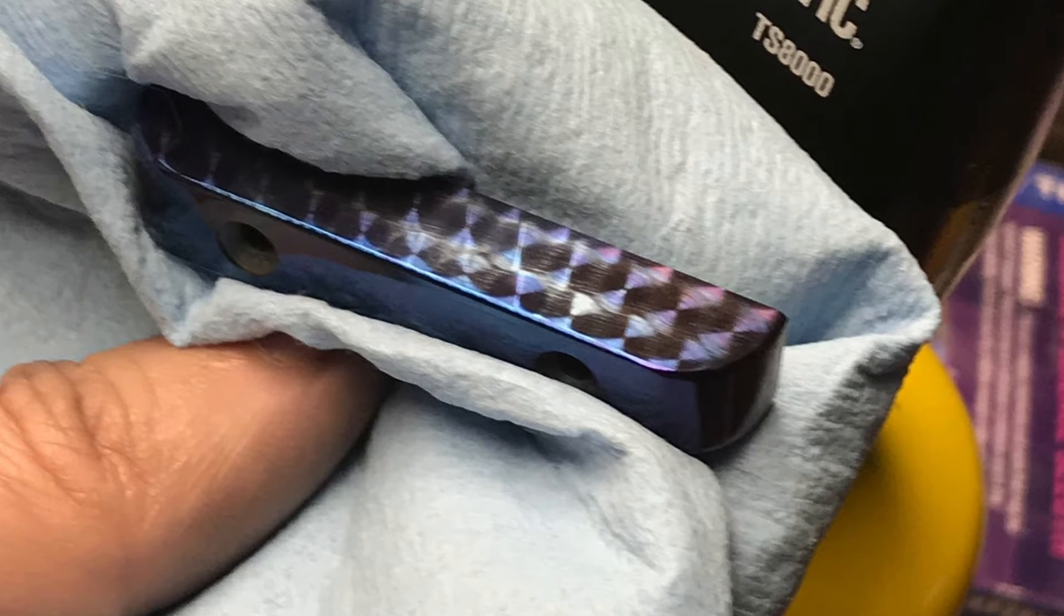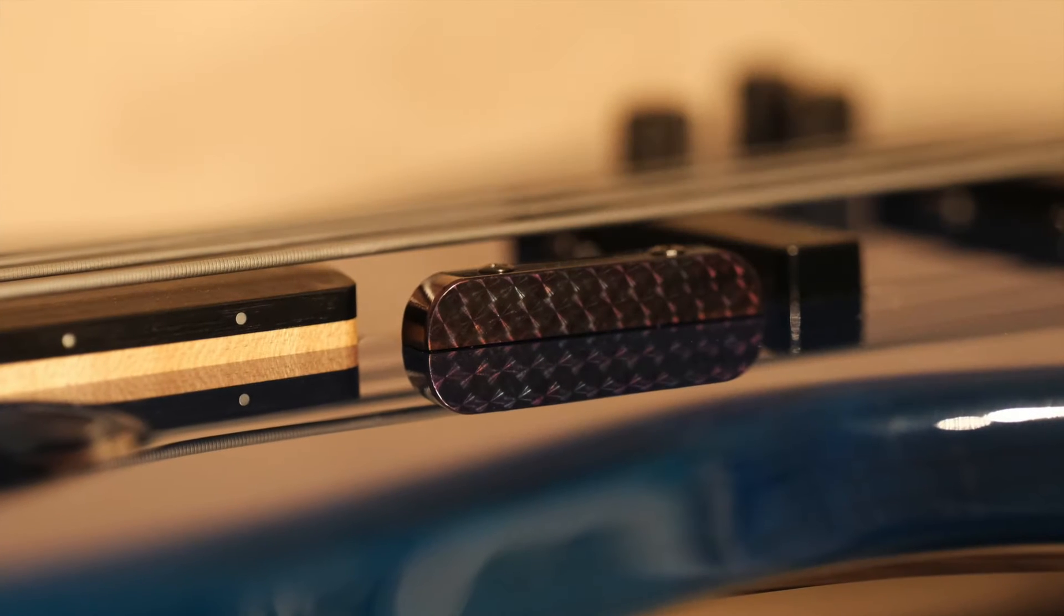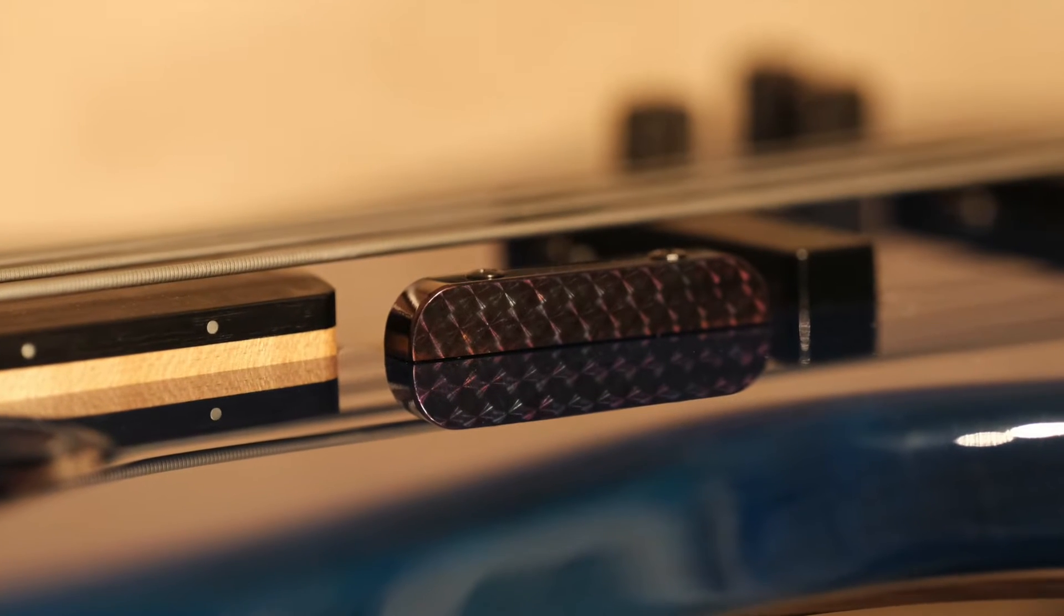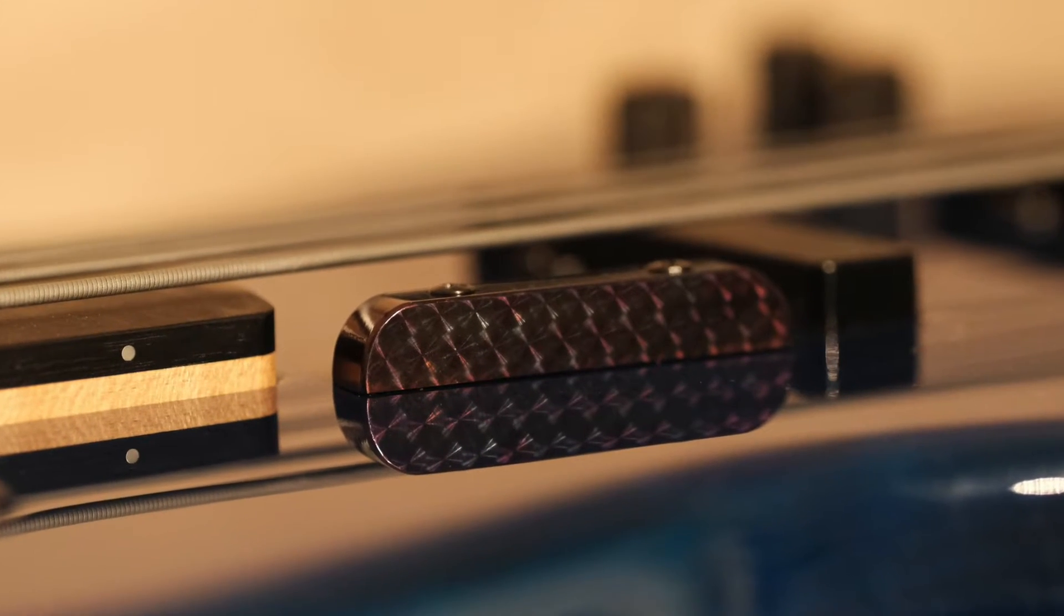Belt sander does a perfectly good job, but I want to use this as an opportunity to use a rotary table on a milling machine. Doesn't that look smart on that guitar? That is a neat looking thumb rest.